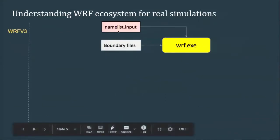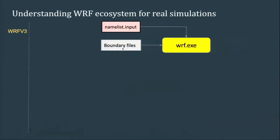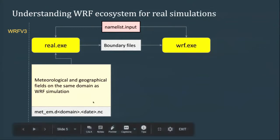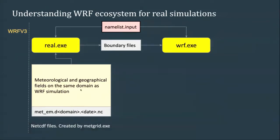To create those binary files, you use another executable called real.exe, which takes as input the same namelist.input file. What it does is vertically interpolate meteorological and geographical fields that you give it as input. It needs NetCDF files which have all the data you want on the same domain as WRF, but not necessarily the same vertical levels — real.exe will do the vertical interpolation.